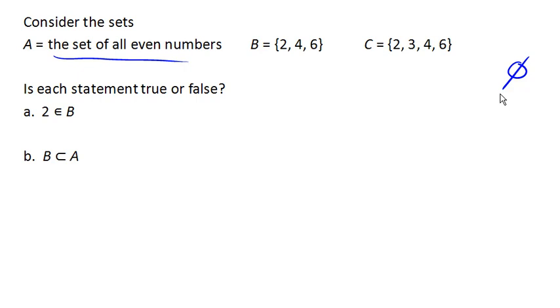So the first question here asks, is this true? Now to understand this, we're going to need to know what this symbol is. And this symbol means element of. So this says, 2 is an element of B. In other words, is 2 an element of the set B? Well, the set B contains 2, so yes, this is true.